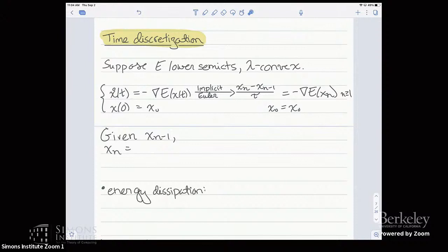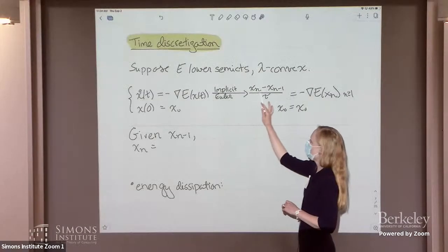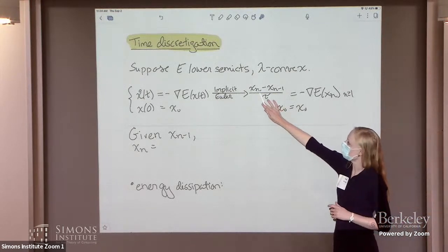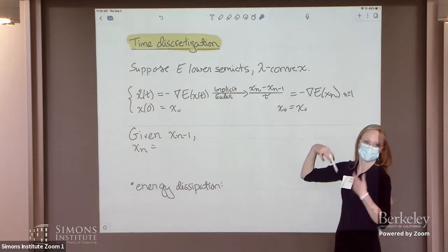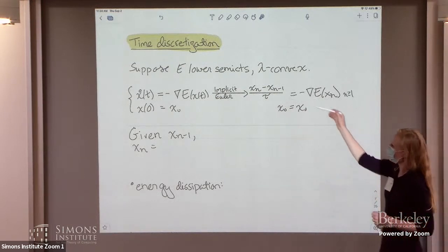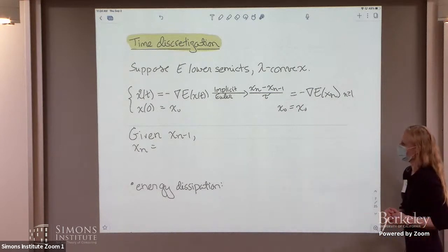If you want to discretize this ODE in time, a natural way is to consider an implicit Euler scheme. Basically, you approximate the time derivative as the change in x over the time step tau, and on the right-hand side you use x of n — the current step — rather than the continuous solution. This is an implicit method because x of n appears on both sides of the equation, so we can't solve explicitly for x of n in terms of x of n minus one. We initialize at the same initial data as the continuous equation.